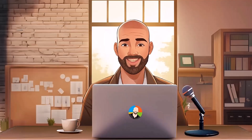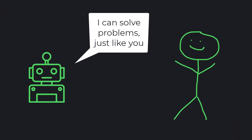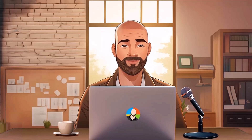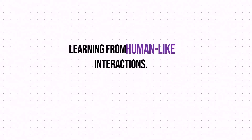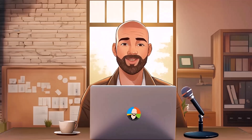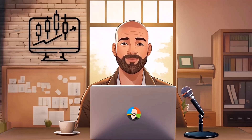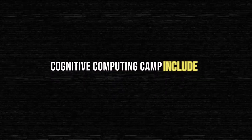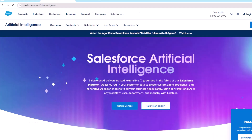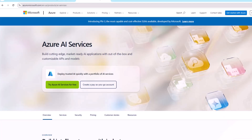Let's take a look at cognitive computing. This type of AI tries to mimic the way humans solve problems and apply reasoning. In super simple terms, cognitive computing processes data to assist in making decisions. It can learn from past experiences and improve over time by understanding, reasoning, and learning from human-like interactions. You'll often find this type of AI used in industries like finance, because it can analyze trends, and in healthcare where it can assist in diagnoses. Some of the major players in cognitive computing include IBM Watson, Salesforce Einstein, and Microsoft Azure Cognitive Services.